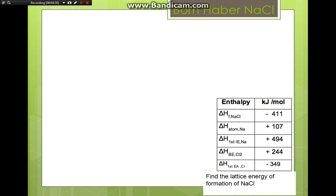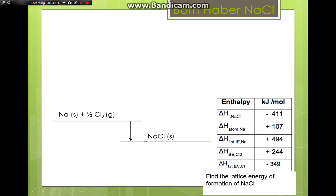We start the Born-Haber cycle with the heat of formation, placing the elements in their standard states and connecting to the ionic solid. The heat of formation is a negative value, releasing 411 kJ/mol, so there is a drop in energy level. The difference in energy between these two levels is 411 kJ/mol.